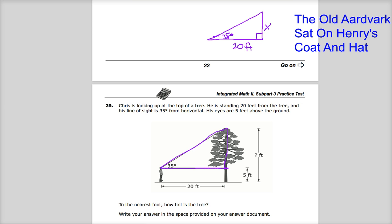The old aardvark tells me the tangent ratio is opposite over adjacent. The sine ratio is opposite over hypotenuse. And the cosine ratio is adjacent over hypotenuse. I need to figure out what I'm working with.